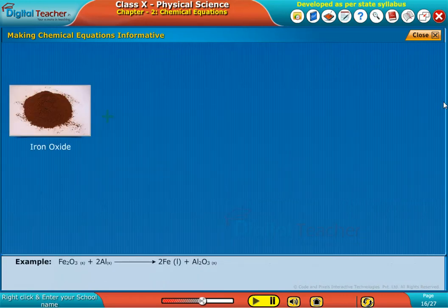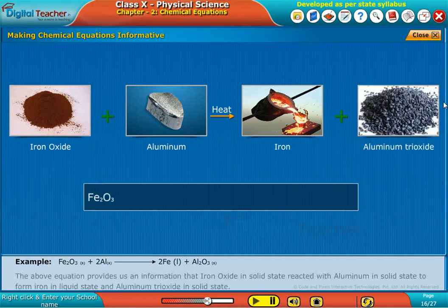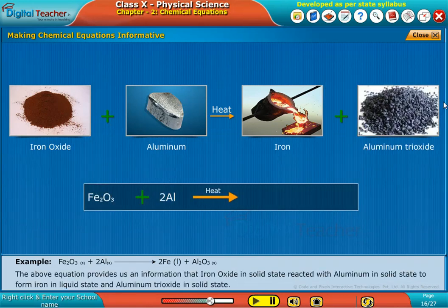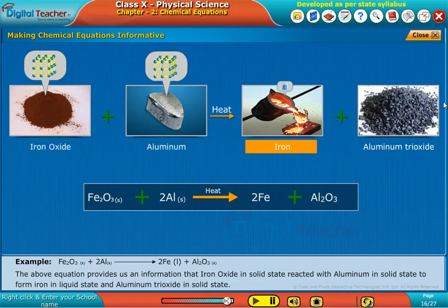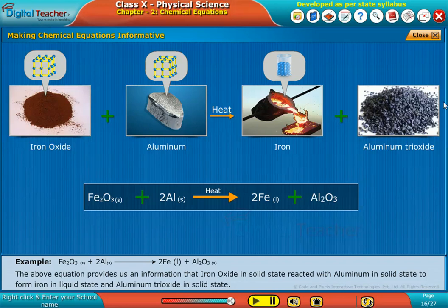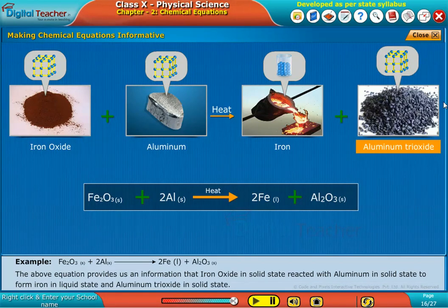For example, consider the equation on screen. The above equation provides us the information that iron oxide in solid state reacted with aluminum in solid state to form iron in liquid state and aluminum trioxide in solid state.